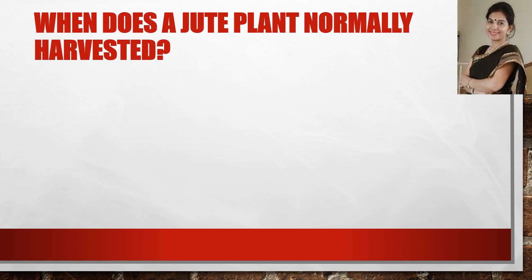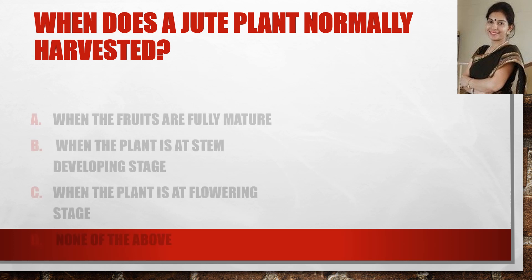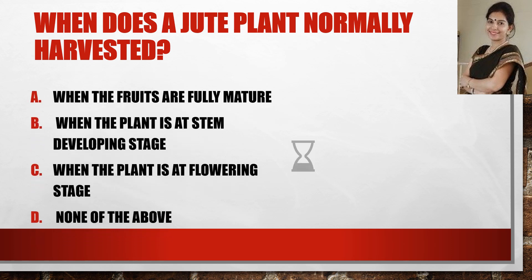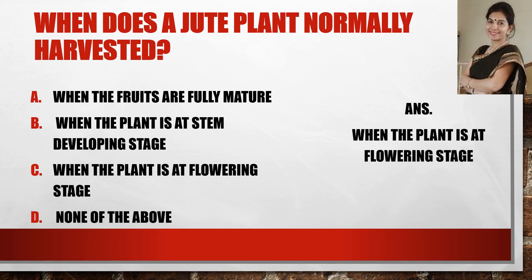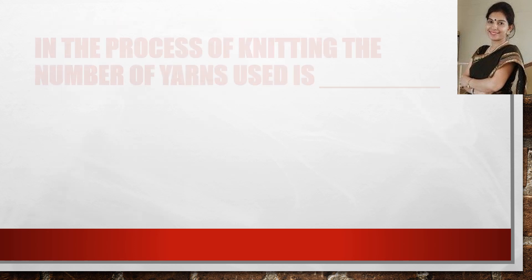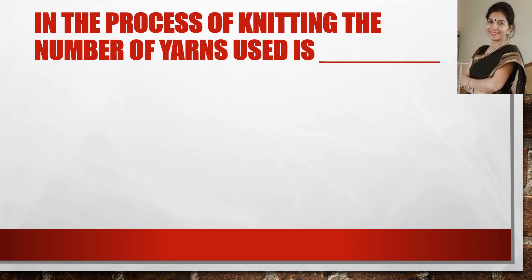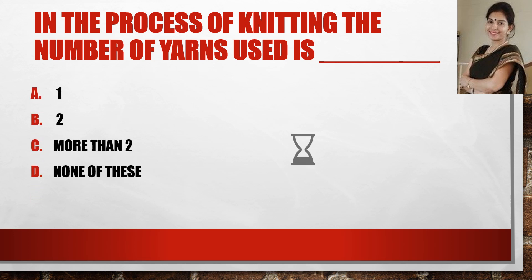When does a jute plant normally get harvested? The answer is when the plant is at the flowering stage. Now the next question: in the process of knitting, the number of yarns used is — the correct answer is one. A single set of yarn is used.